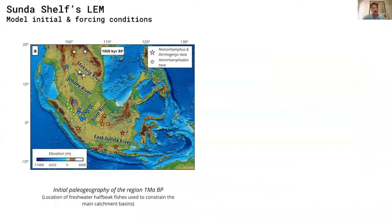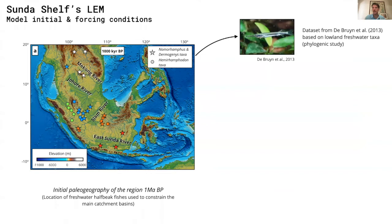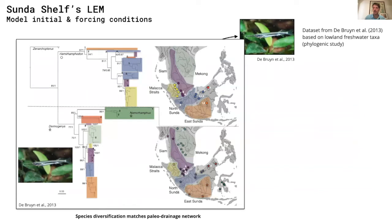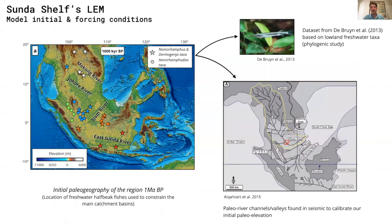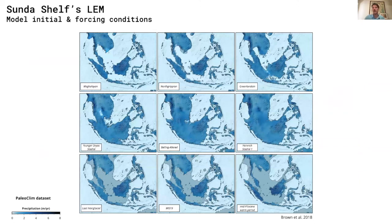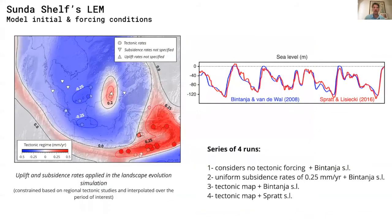To do so, we first created our initial and forcing conditions for a numerical model. The region is characterized by several large river systems, the main ones being the Mekong, Johor, Siam, and East Sunda river basins. We created our initial paleo-topography and drainage system based on available datasets from phylogenetic studies on freshwater fishes, such as the work from De Goune 2013, as well as well logs and seismic studies. We then imposed climate conditions using the PaleoPGM dataset from Dronne et al. 2018, and also tectonic forcing — uplift and subsidence rates — constrained from regional tectonic studies. We also tested two eustatic sea level curves.